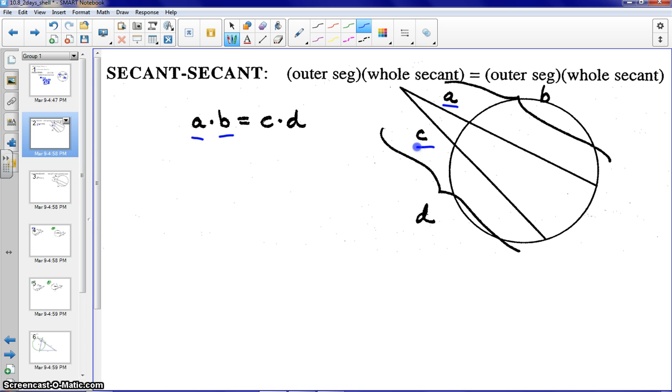So again, let's go ahead and label a couple of these. We'll say A is 2. And then I'm going to label the chord part, or the internal part of the secant, as X. Let's call C, 3, and the internal part, or the chord part of the secant, is 5.